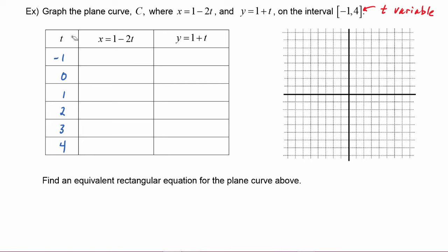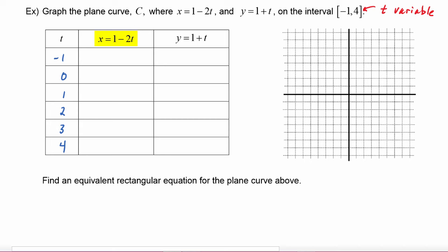Now the parameter t — we've chosen these values. So to find x and y, we have to plug in to the parametric equations. To find the x coordinate we have to do 1 minus 2 times t. So for this first one, if t is negative 1, then we are doing 1 minus 2 times negative 1, which becomes 1 plus 2, which is equal to 3. To find the y value we have to do 1 plus t, so we will be doing 1 plus negative 1, which is equal to 0.